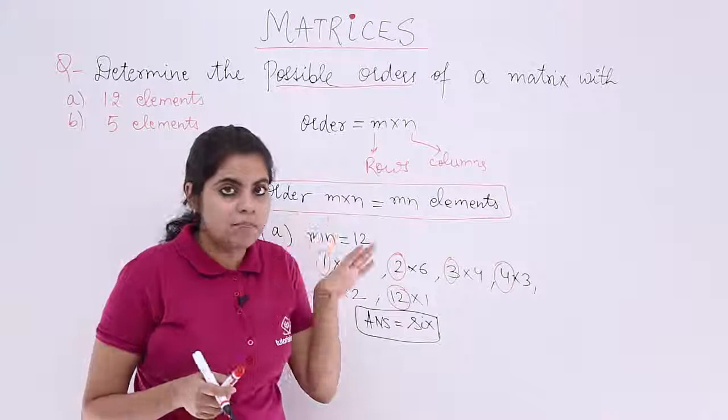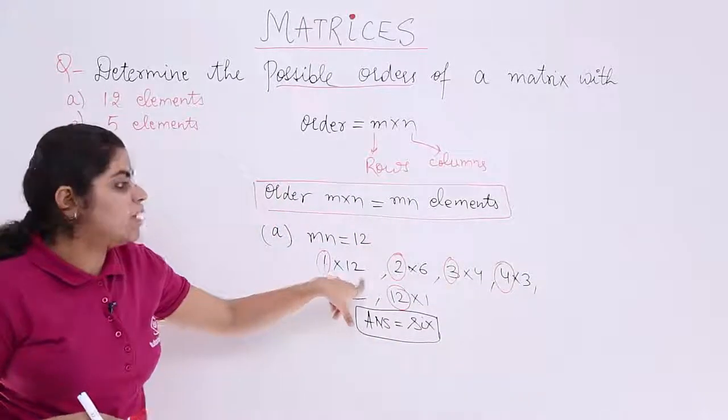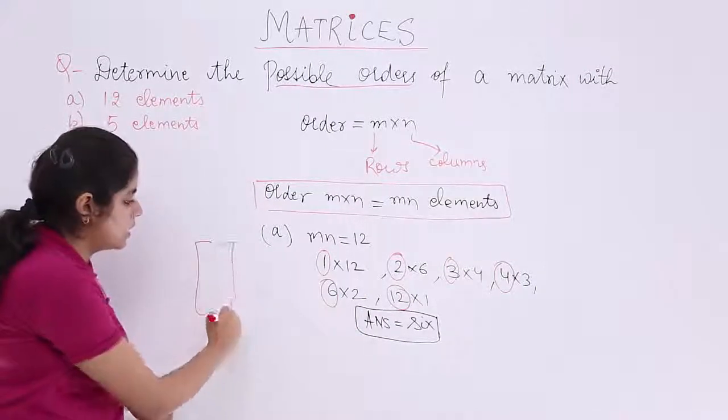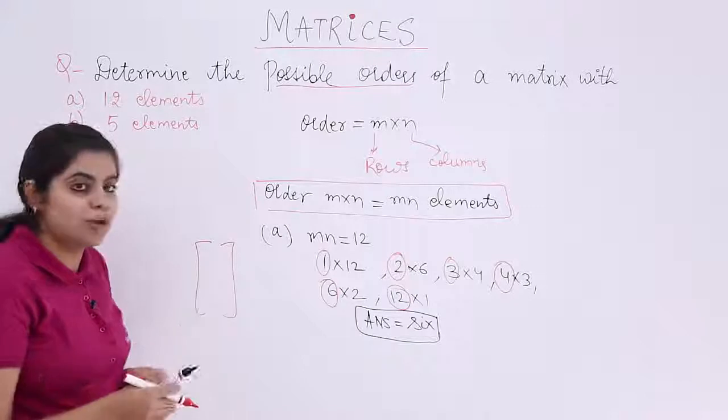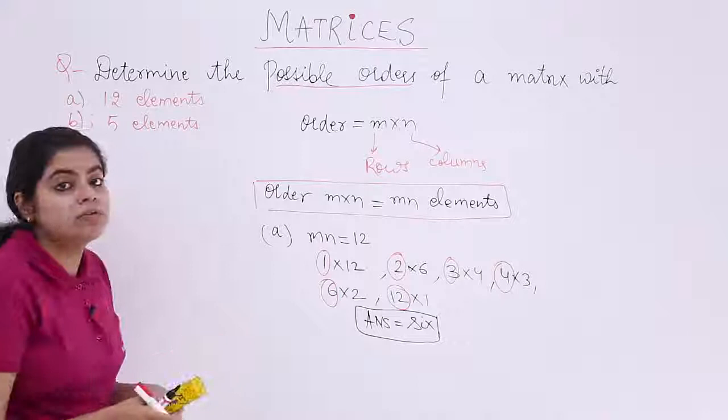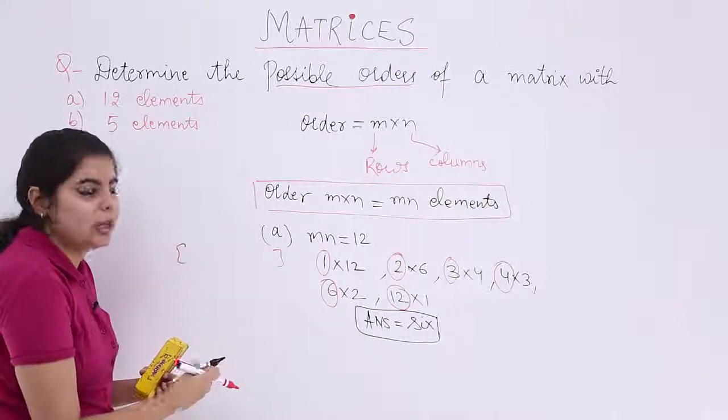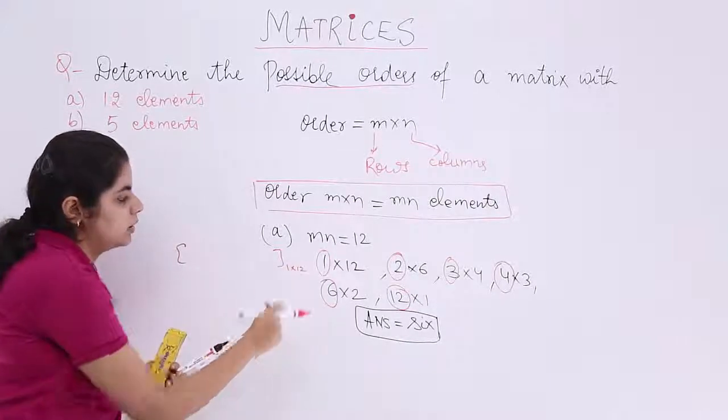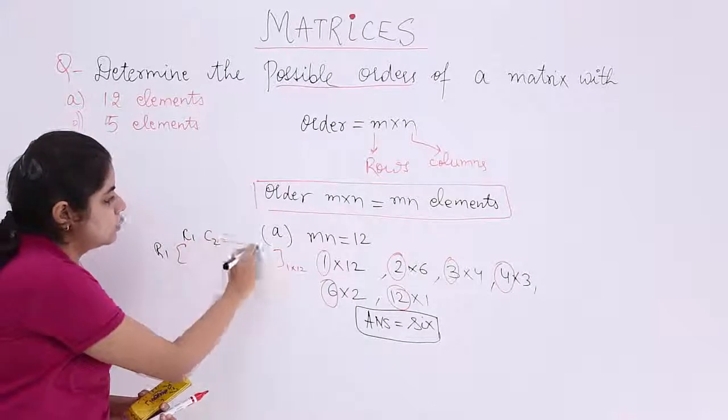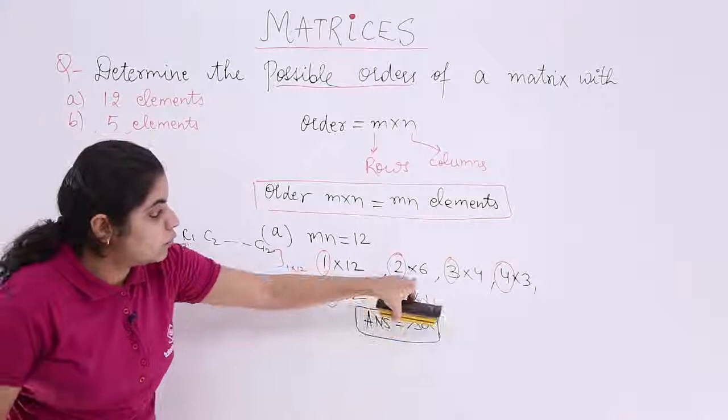What about representation wise? Let's draw the matrix according to these possible orders. 1 by 12 means I would be having a matrix with how many rows and columns? 1 by 12 means 1 row and 12 columns. So this is only 1 row but 12 columns. This is only 1 row R1 but there are C1, C2 till C12 columns. So this is 1 by 12.